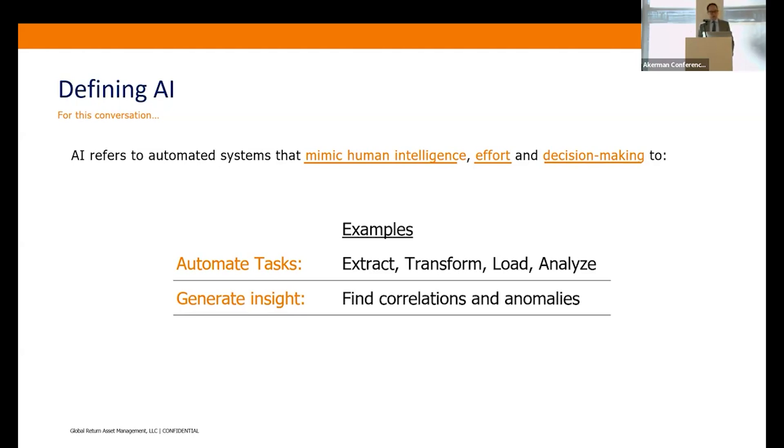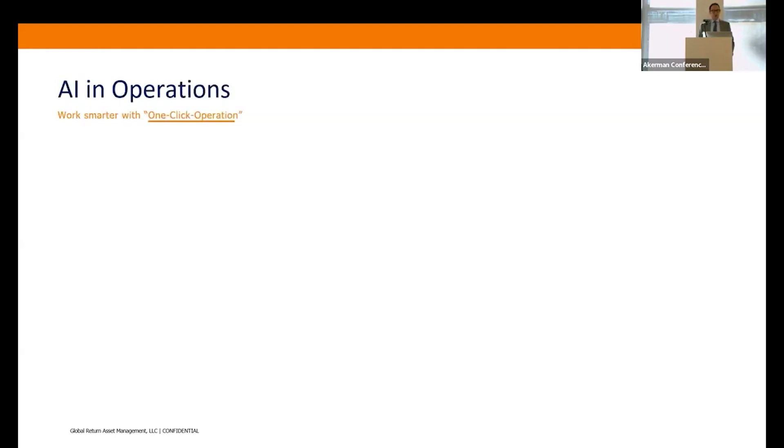How are we using AI in operations? My subtitle is 'Work smarter with one-click operations.' I have designed Global Return's operations where literally we are pushing one button and software code does everything else. It is not an overstatement to say that operations can be run in that capacity, and we're currently doing it with a number of our day-to-day activities, weekly activities, and monthly activities.